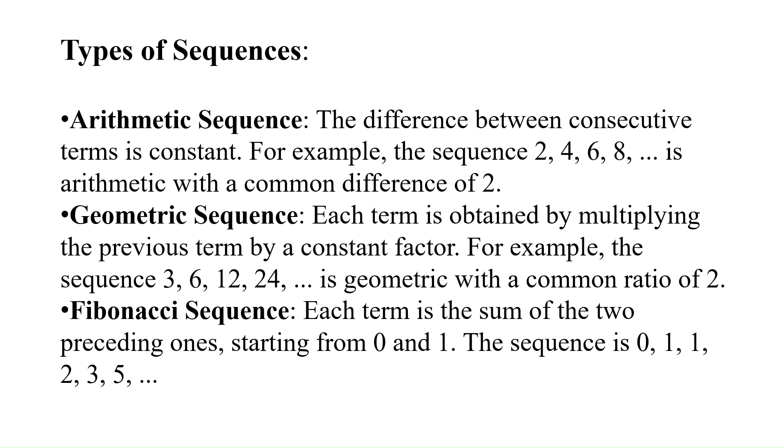Fibonacci sequence: where each term is the sum of the two preceding ones, starting from 0 and 1. The sequence is 0, 1, 1, 2, 3, 5.